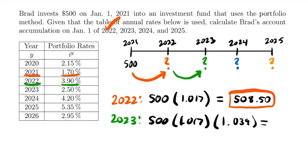If we plug this into our calculator, it equals $528.33. That is the accumulated value at the beginning of 2023.